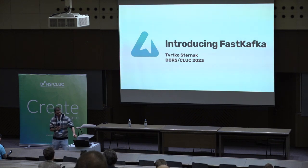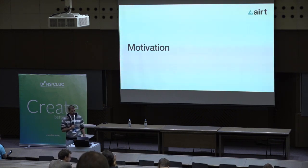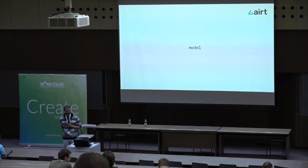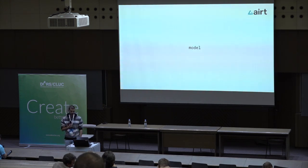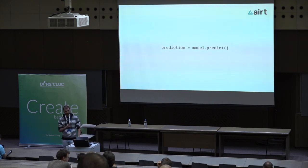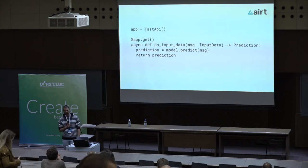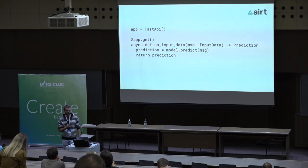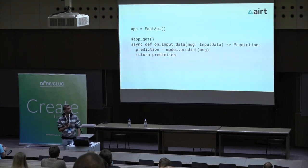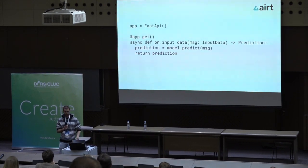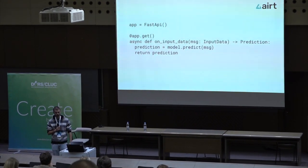A bit about our motivation first. We were working with a customer that needed a model to predict the churn possibility of their customers, so we developed a model for them. Our model can, as any other model, generate some predictions, and the issue was we needed to deploy it. The first iteration was to deploy it using FastAPI — a quite simple process where we just wrap our model into a get function and access it over REST. You put your message and you get back the prediction of the churn possibility of the customer.